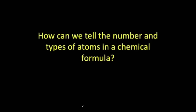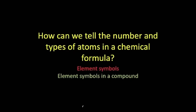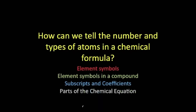Today we're going to be discussing chemical formulas. When we look at a chemical formula, we want to ask the question: how can we tell the number and types of atoms in that chemical formula? We're going to discuss element symbols, which you should be familiar with from our past discussions, element symbols in a compound, what a subscript and coefficient is, and the other symbols that will be part of a chemical equation.